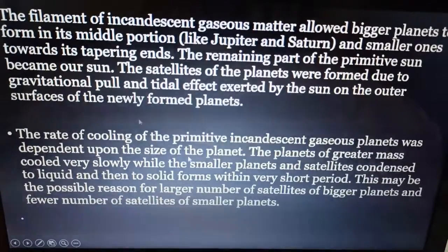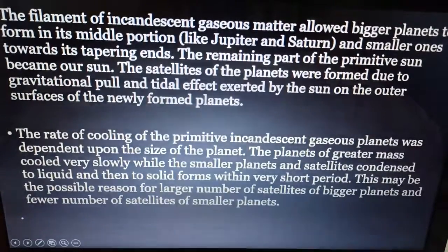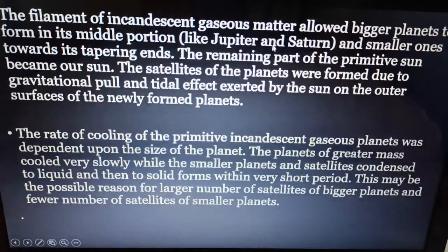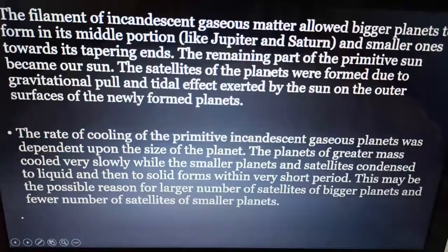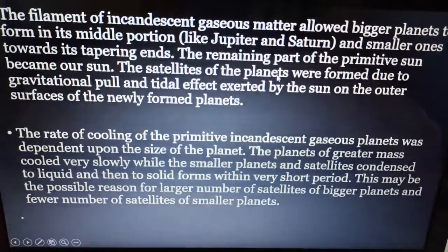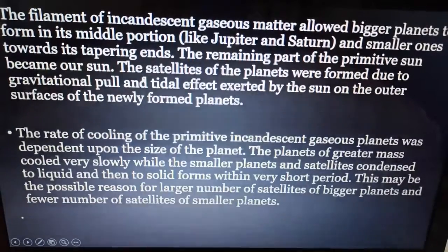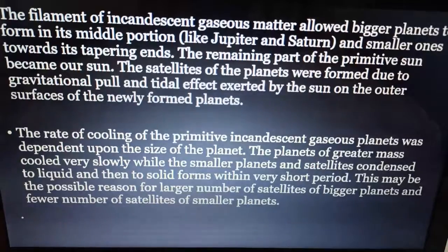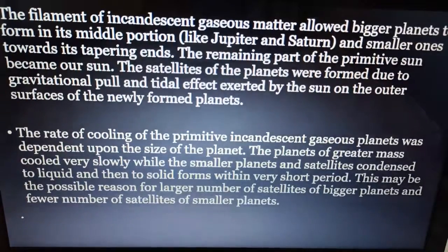The gaseous matter present in the middle portion of the filament formed the bigger planets like Jupiter and Saturn, while the particles present in the tapering ends of the filament formed the smaller planets. The remaining part of the primitive sun became our sun, and the satellites of the planets were formed due to the gravitational pull and tidal effect exerted by the sun on the outer surface of the newly formed planets.